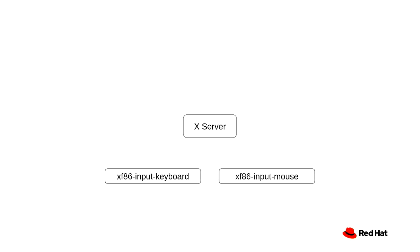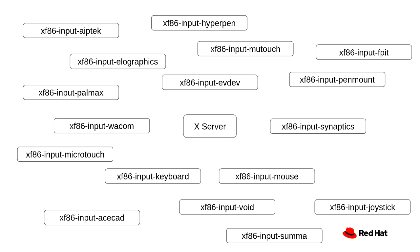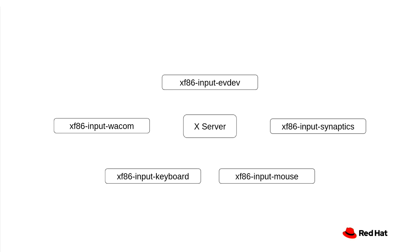X handles input devices through a number of different input drivers — technically just shared libraries compiled against the X server headers, with no real API, intended to be composed with the X server. Historically we had two drivers: mouse and keyboard. They handled hardware directly, so they were real drivers. The mouse driver had a whole bunch of PS2 protocol dialects. Over time more devices appeared, leading to copy-paste drivers with minimal protocol parsing, most of which ended up forgotten and unmaintained. After cleanups we were left with five drivers: Evdev, Wacom, and Synaptics — mouse and keyboard were dropped roughly a decade ago.